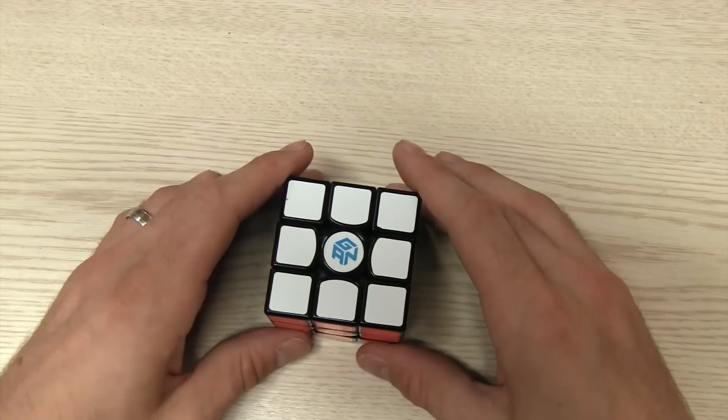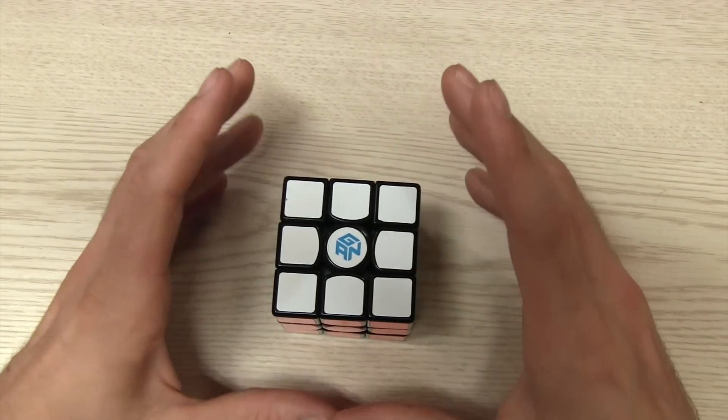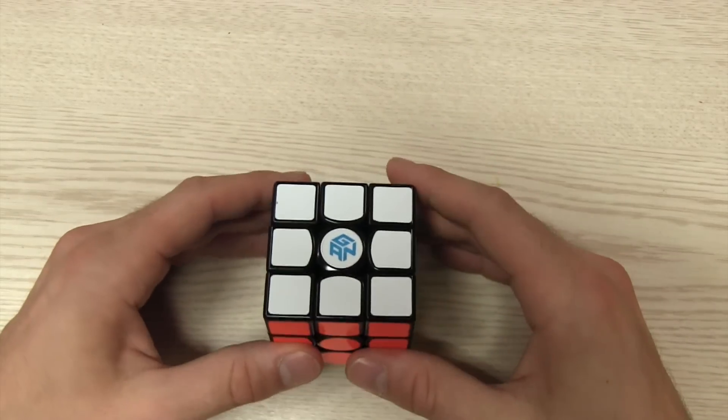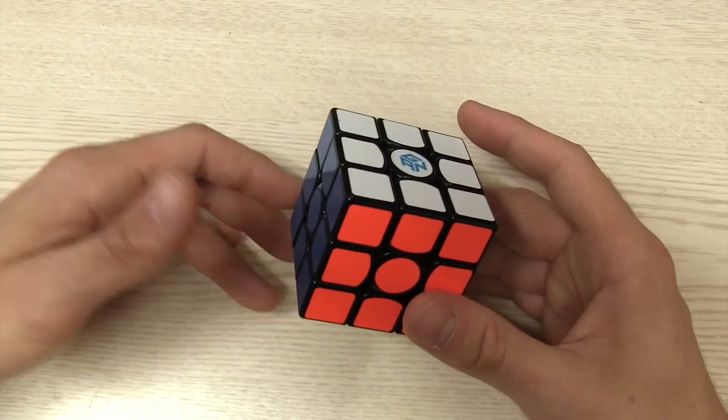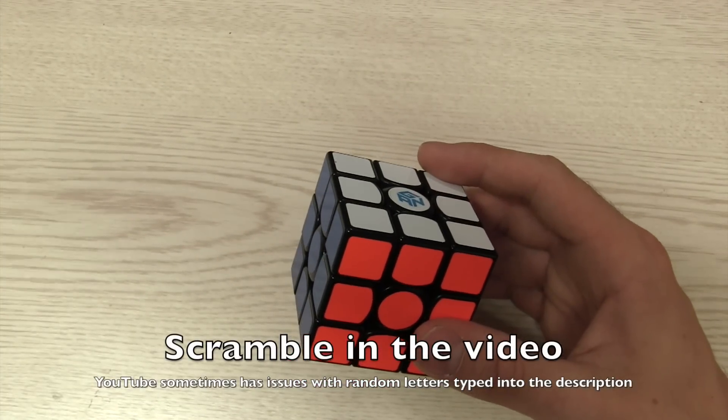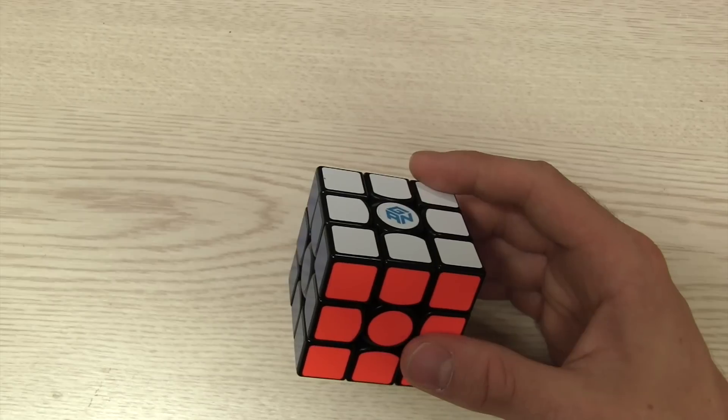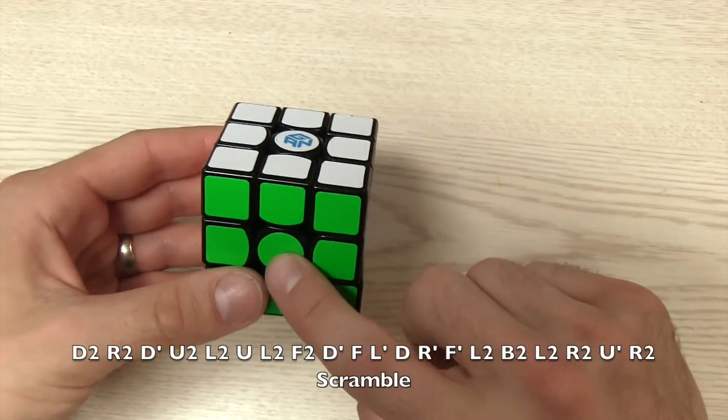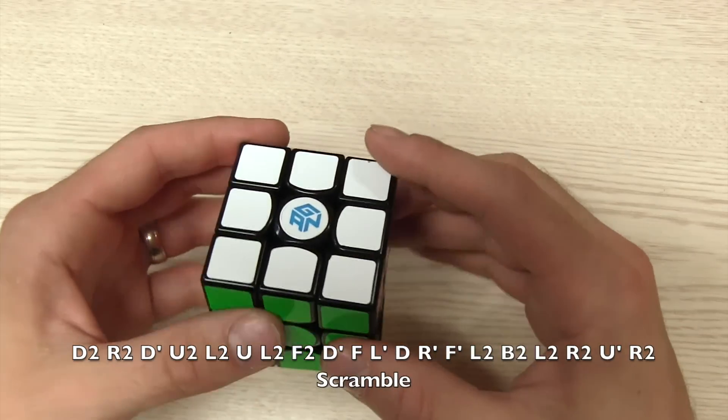So those are all the steps. Now you can rewatch that part to go through those notes or go to the website to see the list of them. I'm going to do a quick walkthrough solve. So I'm going to put the scramble in the description and this walkthrough solve is going to hopefully get through all the issues you can find. So make sure you scramble this with green in front and white on top if you want to do this with me.